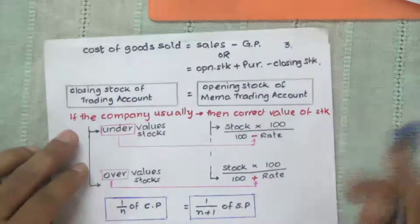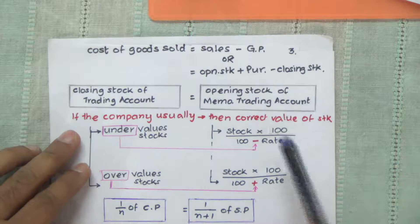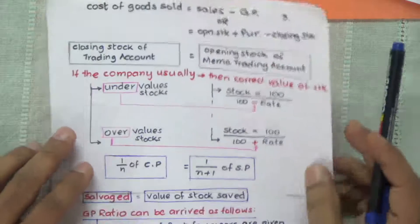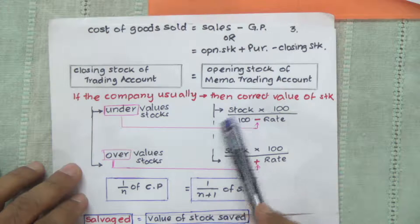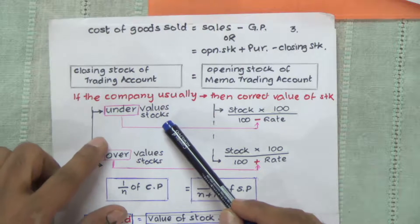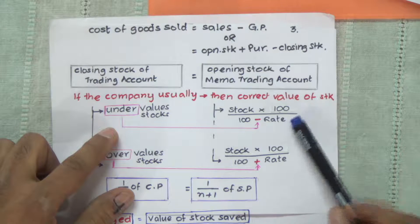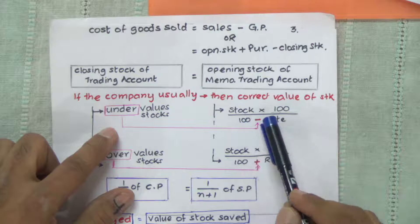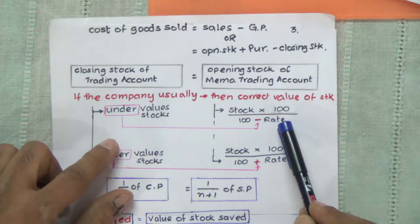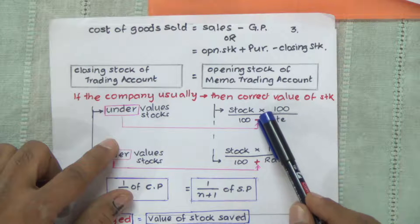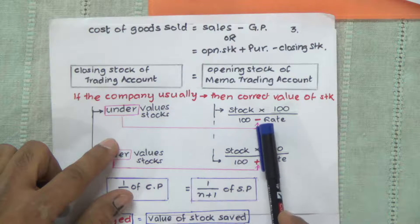The closing stock of the trading account is the opening stock of the memorandum trading account. Sometimes the problem states that the company undervalues the stocks. If it undervalues the stocks, then the correct value of the stock can be found using the formula: stock × 100 ÷ (100 minus rate). We use the minus sign when the stocks are undervalued.